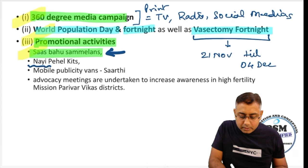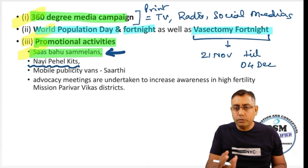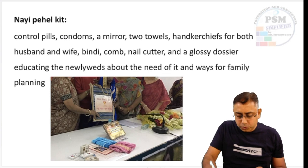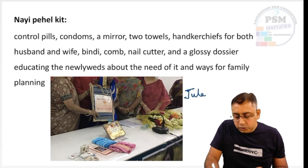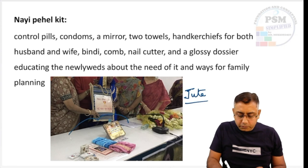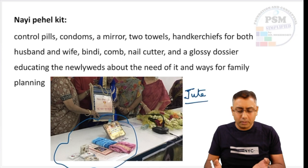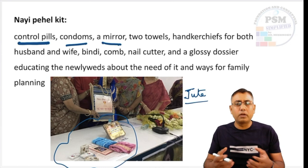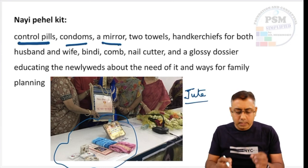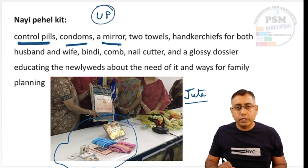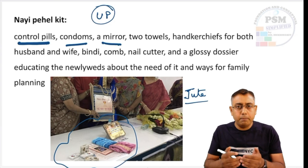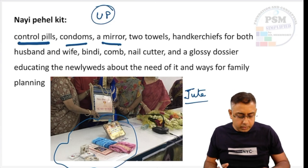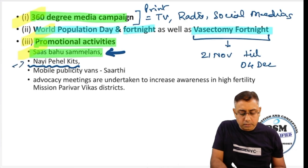There's a new thing called the Nai Pahel Kit. Nai means new, Pahel means for the first time. In this kit, there is a jute bag being given which contains some commodities — birth control pills, condoms, a mirror, two towels, handkerchiefs, and so on. These are primarily for newlyweds. It was started by the Government of Uttar Pradesh — this is the Nai Pahel Kit launched under Mission Parivar Vikas for newlywed couples.